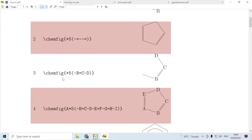In the second case, there is no mention of the atoms and we get this output. Suppose you specify as in case 3, chemfig *5(-B=C-D), that means we are going to have a 5-sided ring, but within parenthesis we specify only 3 bonds: single bond, double bond, single bond, and 3 atoms B, C, D. Then we get an incomplete ring like this.